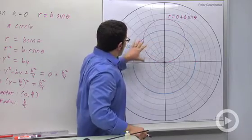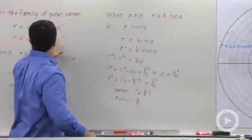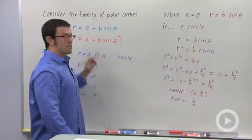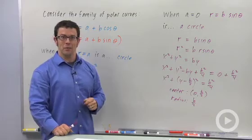So just remember that the special cases of this family, when either of these coefficients are 0, are circles. We'll investigate the other cases in a moment.